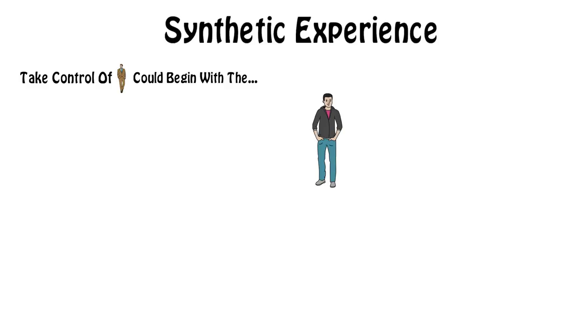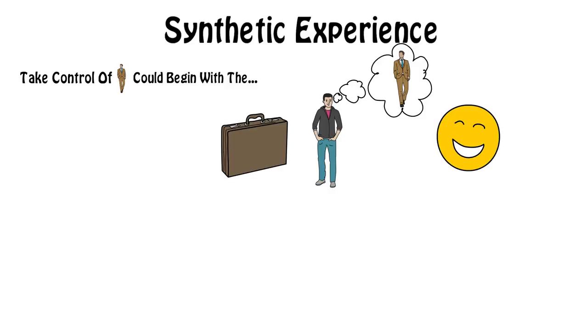So taking control over self-image can begin with something that Maltz calls synthetic experience. This is to create an adequate and realistic image of yourself that you're happy with and vividly imagine performing the activities that you would do if you were that type of person.